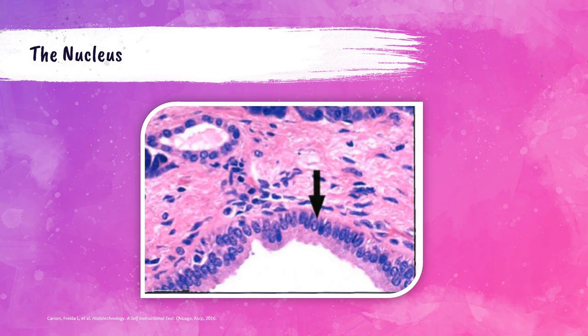This is a photograph of simple columnar epithelial cells of the pancreatic duct. The arrow is pointing to a row of nuclei — see how dark purple or dark blue they are. These are the nuclei, which is the plural term for nucleus, and those are basophilic — that dark blue or purple color.